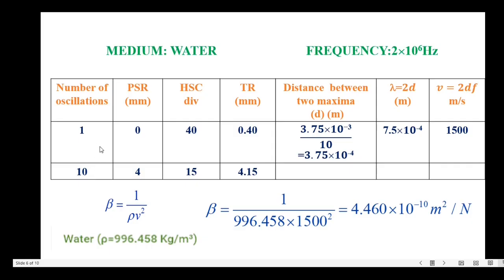Therefore, velocity v equals 2d times f, where f is the frequency of 2 MHz. Multiplying 7.5 times 10 to the power minus 4 by 2 times 10 to the power 6 gives 1500 meters per second — this is the velocity of the sound wave in the water medium. Then calculating adiabatic compressibility beta by substituting the density of water and the velocity value, we get beta equals 4.460 times 10 to the power minus 10 square meters per newton.